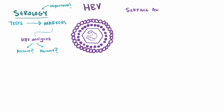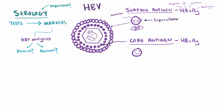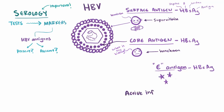The key marker for HBV infection is the HBV surface antigen, HBsAg — think of this like the supervillain in the story, living on the surface of the virus. Another marker is the core antigen, HBcAg, meaning these antigens come from the core of the virus — like the dispensable henchmen working inside the villain's evil factory. Finally, there's the E antigen, which is secreted by infected cells and is a marker of active infection. Along with viral DNA, the E antigen tells us that the virus is replicating and infecting.